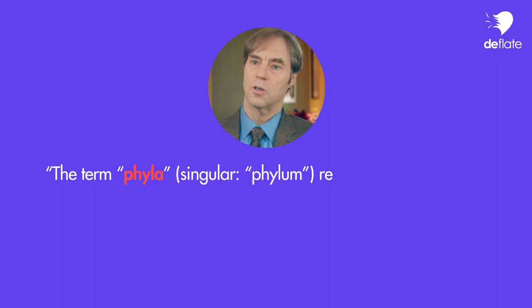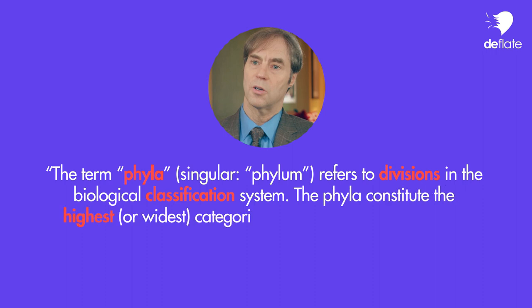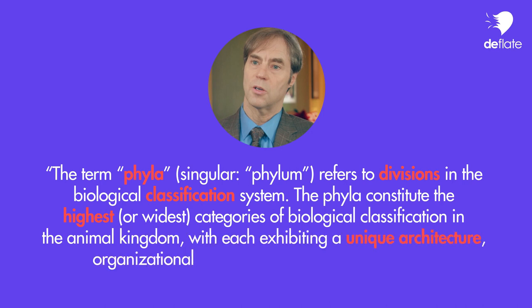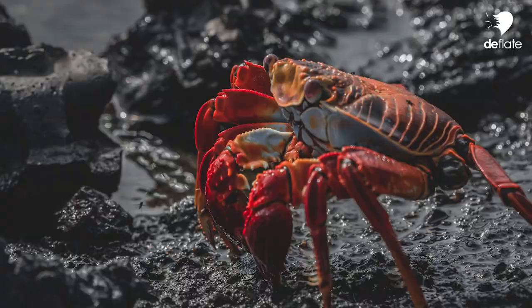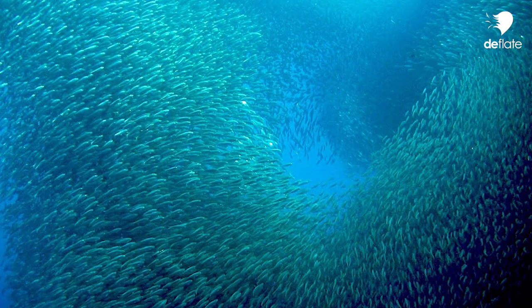Here's an important term you want to wrap your head around: phyla. The term phyla — singular phylum — refers to divisions in the biological classification system. The phyla constitute the highest or widest categories of biological classification in the animal kingdom, with each exhibiting a unique architecture, organizational blueprint, or structural body plans. For example, the phylum of the arthropods includes all insects, all spiders, all types of crabs, lobsters, and trilobites. The phylum of the cnidarians includes corals, jellyfish, and sea anemones. And the phylum of the chordates includes all birds, all reptiles, all fish, and all mammals.